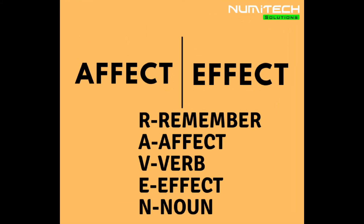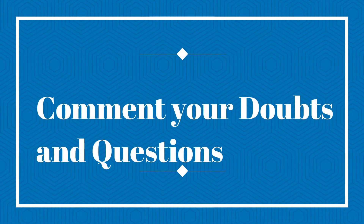RAVEN stands for: R — Remember; A — Affect is a V — Verb; E — Effect is a N — Noun. So 'affect' is a verb and 'effect' is a noun. This is the end of today's lesson.